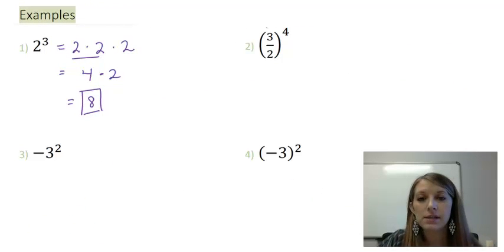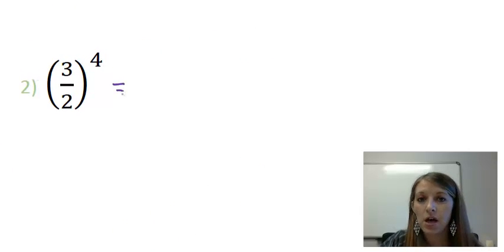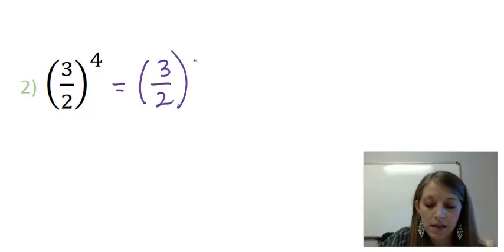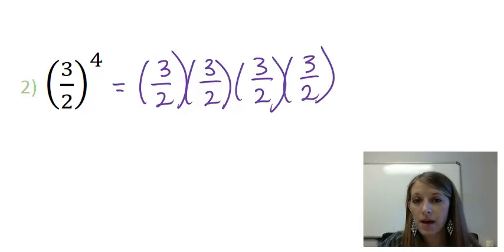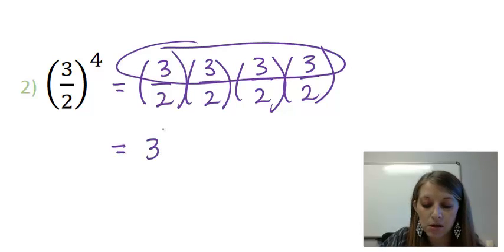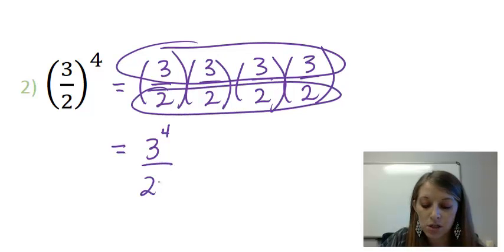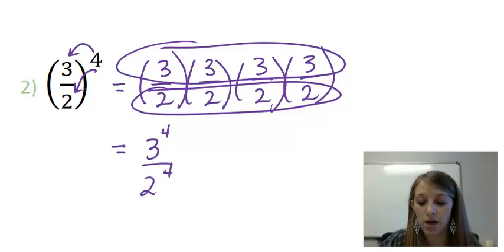Example 2 is the same thing but in fraction form. We know to multiply fractions you multiply straight across. This is 3 halves times itself 4 times, because that's what the power of 4 means. But there's a shortcut with fractions raised to exponents: if I multiply all the way across, the numerator gives me 3 to the fourth power, and the denominator gives me 2 to the fourth power. So I can distribute this power to both my numerator and my denominator.